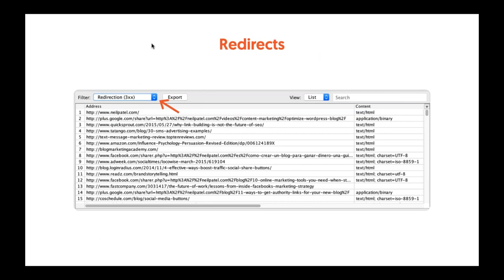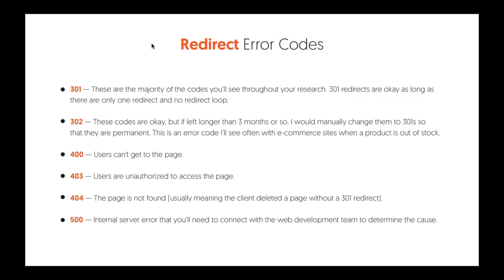Going back to Screaming Frog, when you put in your URL, you can look for any 301 redirects because you want to make sure you're using redirects for bad pages. If you're using them, great. If you're not using them, then there's something off. Make sure you're looking at redirects and seeing whether they're right or wrong — you always want to end up using the right ones.